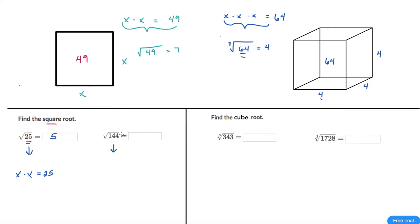And then we'll do the same thing for 144. We're asking what number times itself is equal to 144. And in this case it's 12. So some of the earlier square roots are a little easier to memorize.